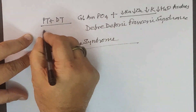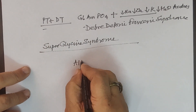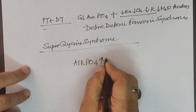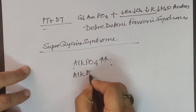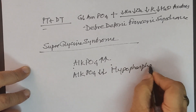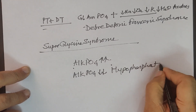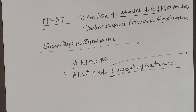In all these rickets, alkaline phosphatase would rise. But if there is a genetic deficiency and alkaline phosphatase is low, then it is called hypophosphatasia. So hypophosphatasia is the condition in which, with rickets, you find alkaline phosphatase is low. This finishes all types of rickets: dietary, absorptive, renal, and hypophosphatasia. Thank you.